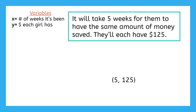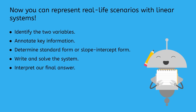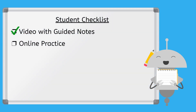Writing down what each of my variables means really helps me make sense of the solution. Now you can represent real life scenarios with linear systems. Remember to start by identifying the two variables, then annotate key information and determine if you'll be using standard form or slope-intercept form for each equation. Then write and solve the system. Also be sure to interpret your final answer by writing out what it means, so you can clearly connect your solving to the actual scenario. Now that we're finished with the lesson video, you're ready to move on to the online practice. Good luck and I'll see you next time.